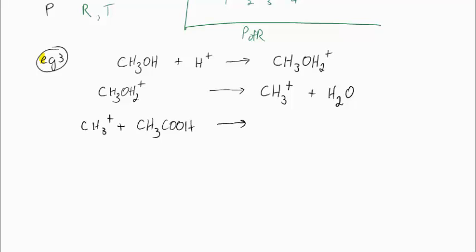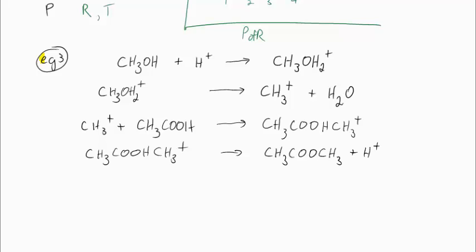That CH₃⁺ is also an intermediate and it reacts with vinegar or acetic acid to make a complicated looking species here. That third species also falls apart and this time it makes an ester which might have a very nice fragrance and H⁺.